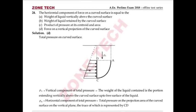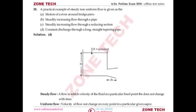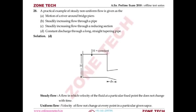Question number 24: The horizontal component of force on a curved surface in static water. A curved surface has two pressure components: vertical and horizontal. The vertical component equals weight of water above the curved surface. The horizontal component equals the force on the vertical projection of the curved surface at the centroid of that projection. Answer is D: force on the vertical projection of curved surface.